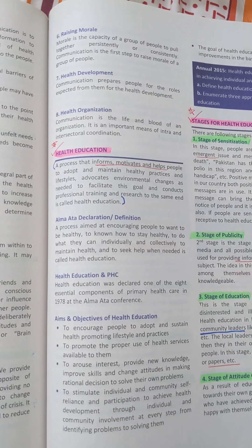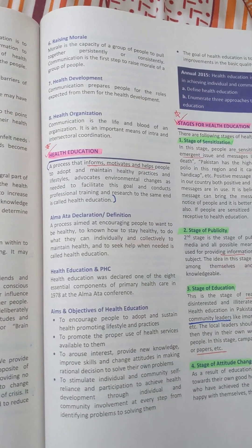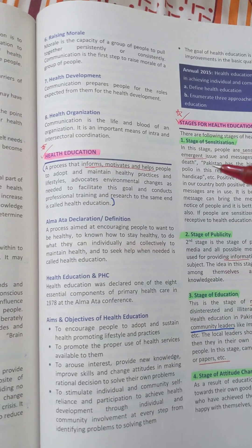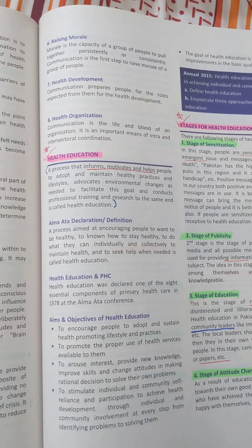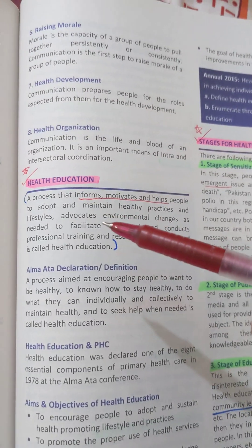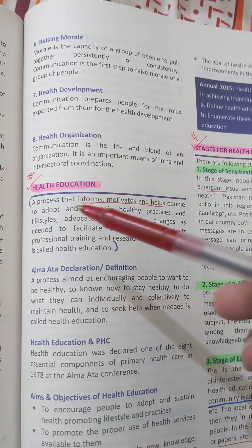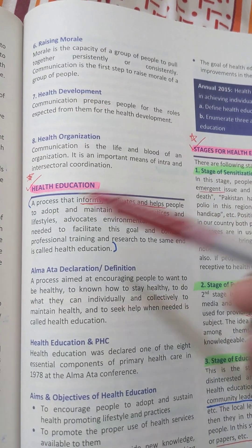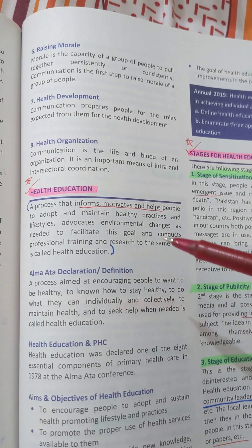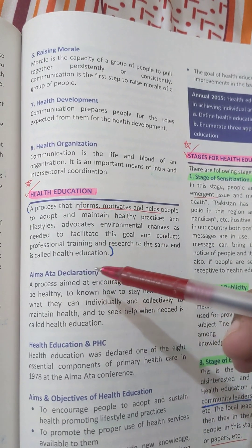The next question is the definition of health education and the stages of health education. We have to communicate a health-related message or provide health education to people. The definition of health education is that it is a process that informs, motivates, and helps people to adopt and maintain healthy practices and lifestyles. It also advocates environmental changes as needed to facilitate this goal and conducts professional training and research to the same end.